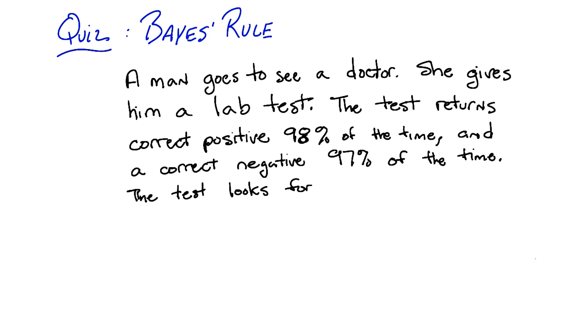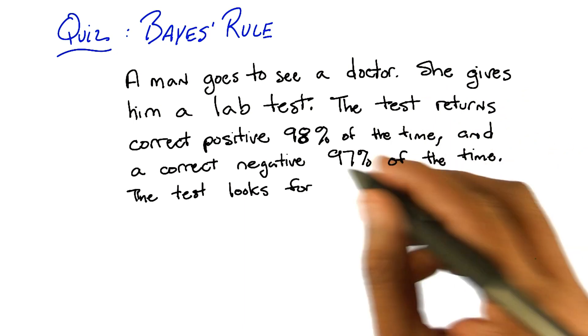So what's his problem? Oh, that's a question. So the test looks for a disease. Give me a disease. Spleen? Okay, I like that. So the test looks for spleen titus.